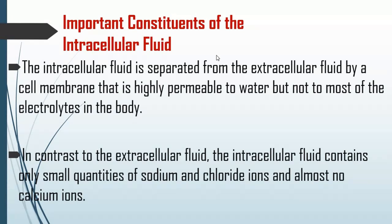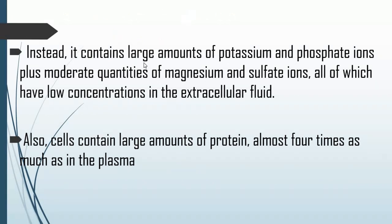The intracellular fluid is separated from extracellular fluid by the cell membrane. In contrast to extracellular fluid, intracellular fluid contains only small quantities of sodium and chloride ions and almost no calcium ions. Instead, the ICF contains large amounts of potassium and phosphate ions, plus moderate quantities of magnesium and sulfate — all of which have low concentrations in extracellular fluid. Cells also contain large amounts of protein, almost four times as much as in the extracellular compartment.